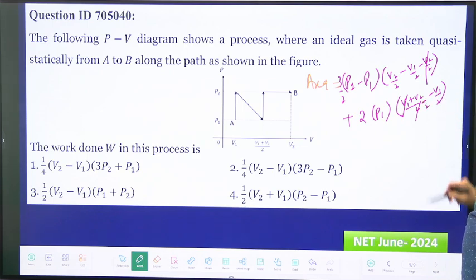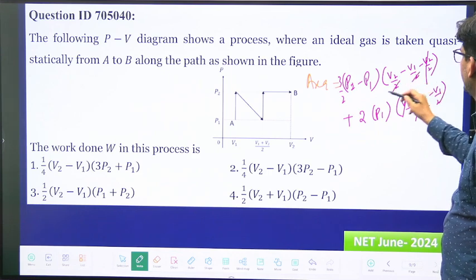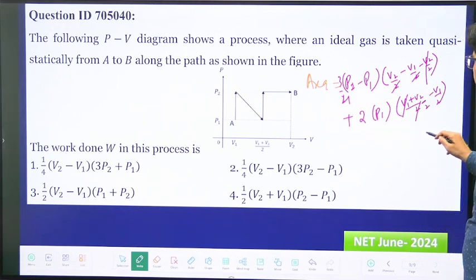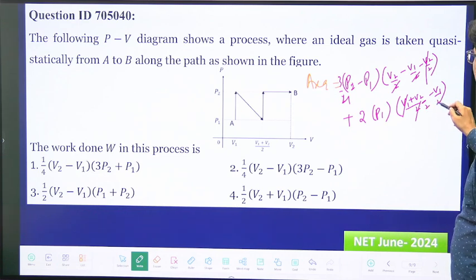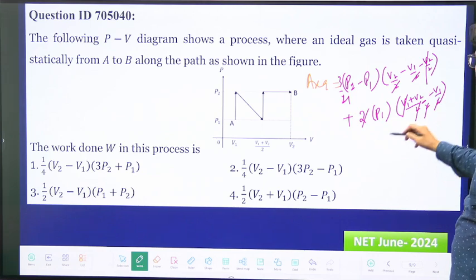Okay, so now you can see here this will become v2 minus v1 and I can put 4 here, and this is also v2 minus v1, and I can just cancel this.